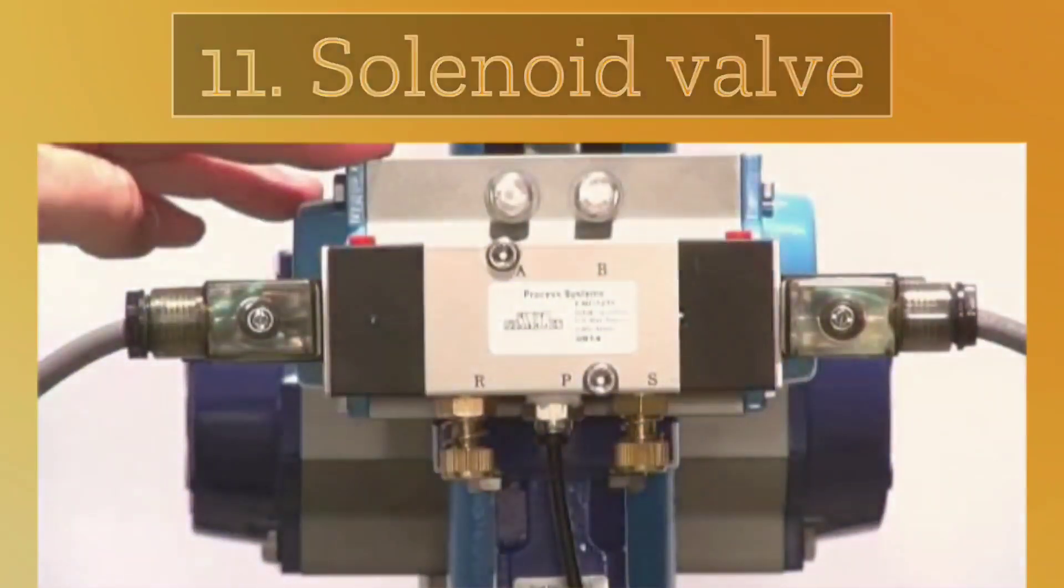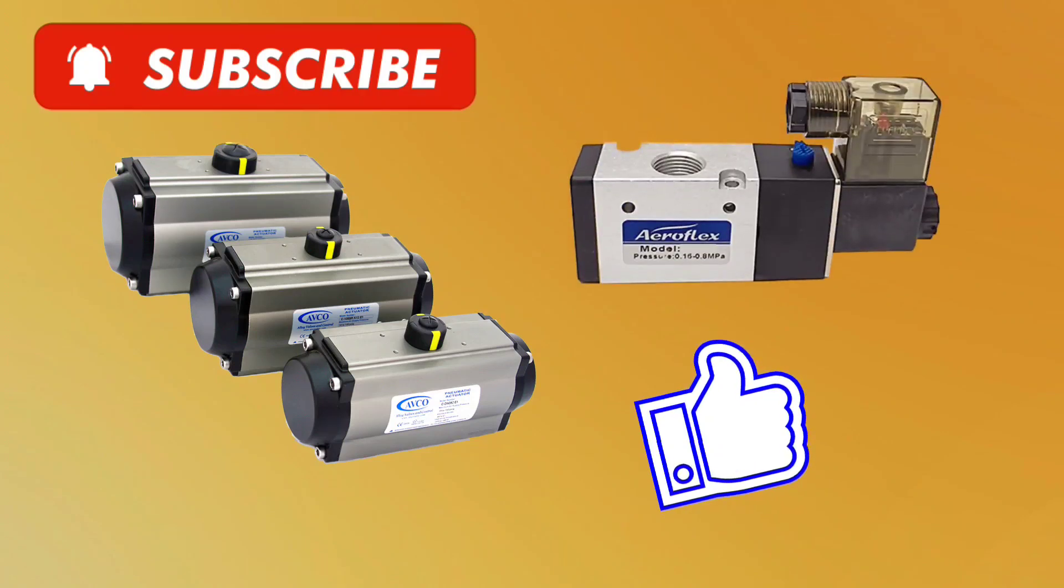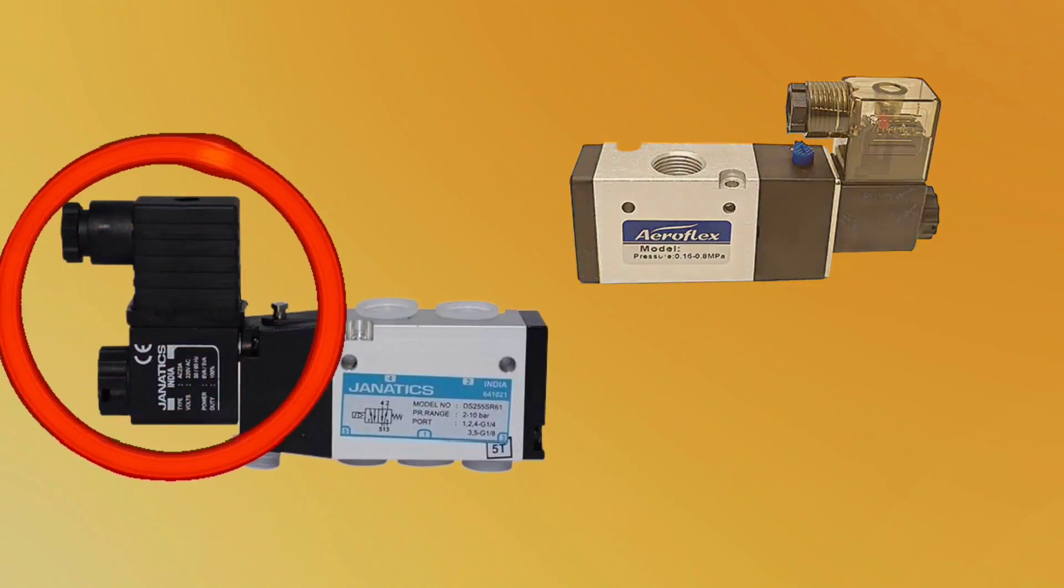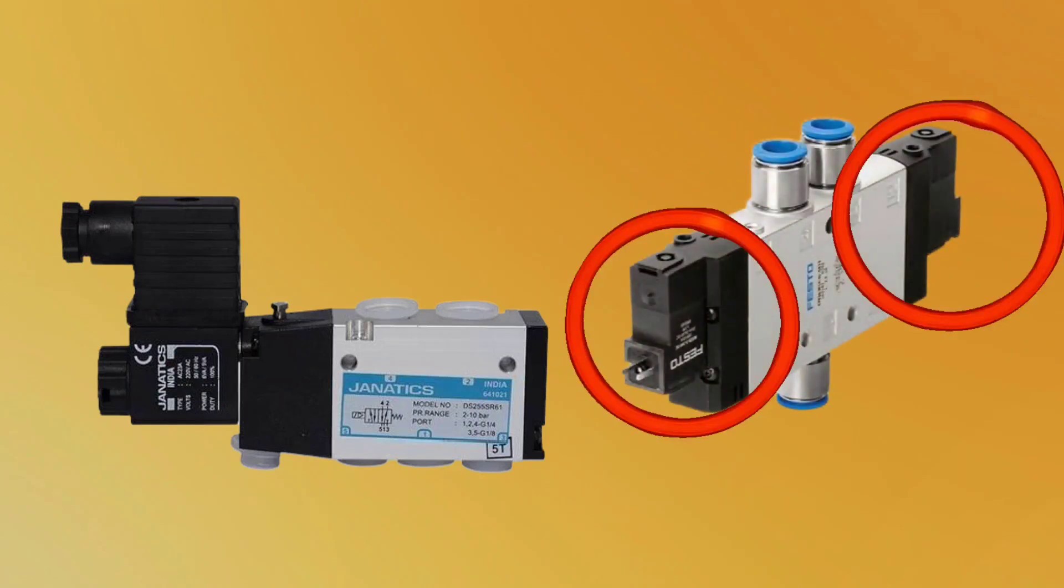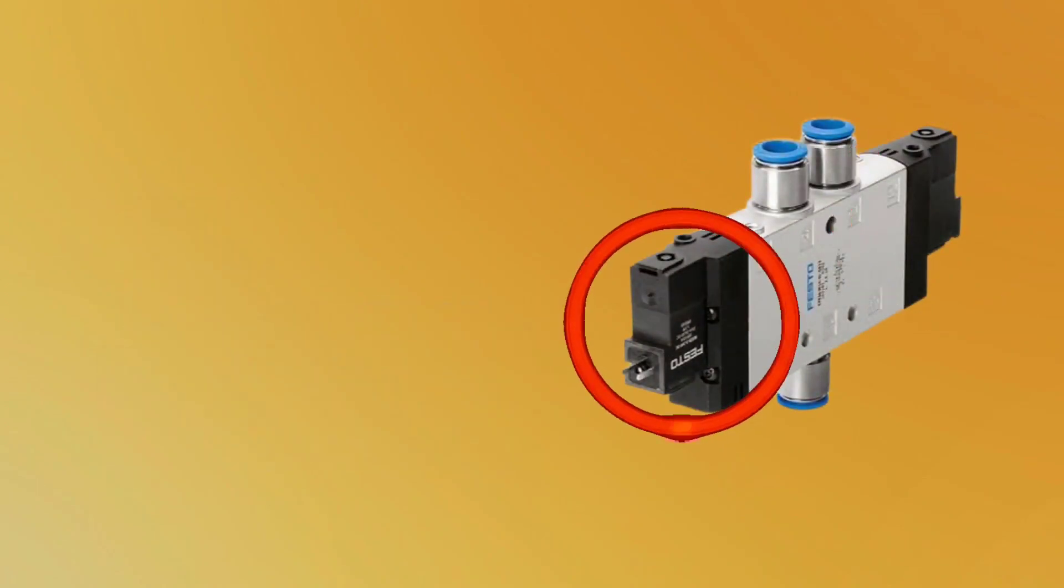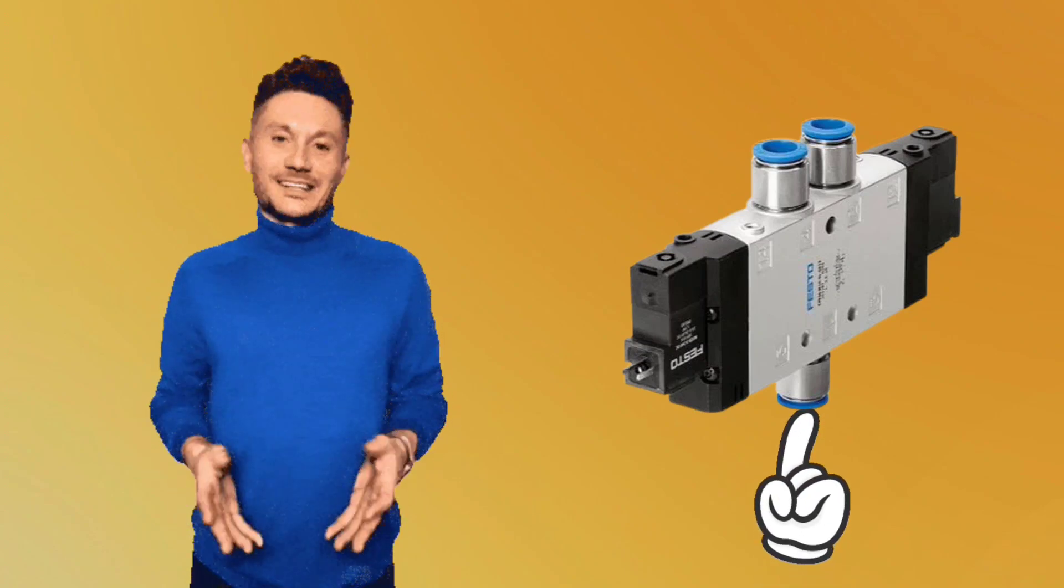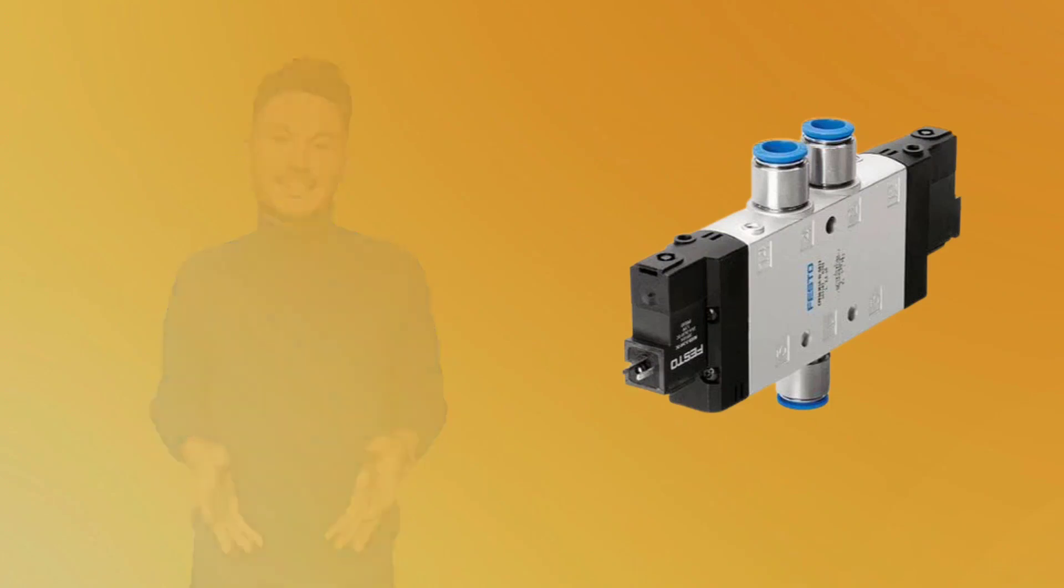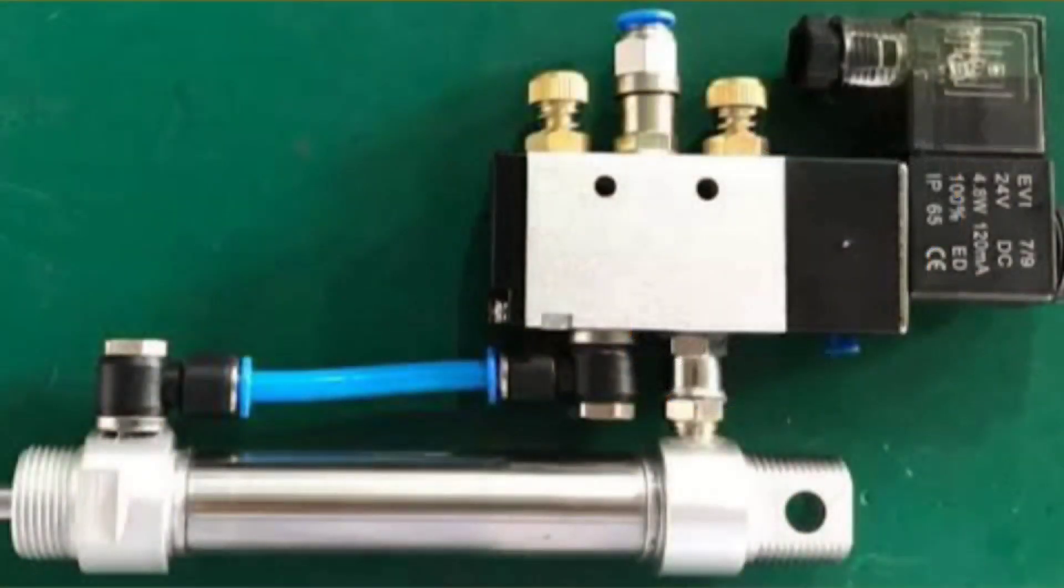Next one is solenoid valve. Pneumatic actuators are operated by solenoid valves. Solenoid valve is operated by coil in solenoid valves. Single coil or double coil solenoid is used. Solenoid valves have one input and two outputs of air. Its output air is provided to pneumatic actuators or provided in pneumatic cylinders.